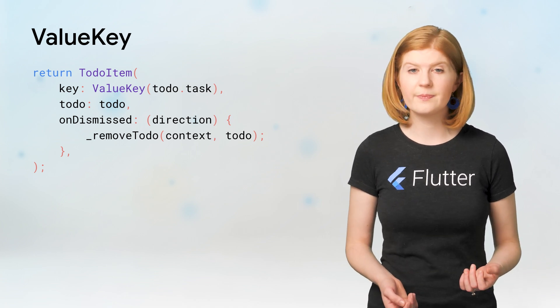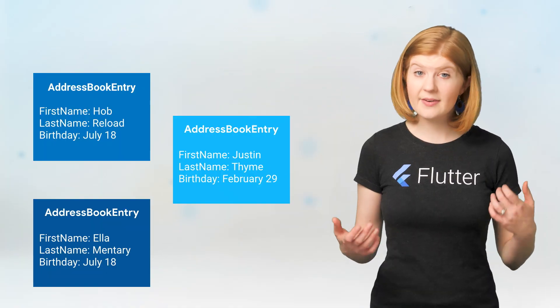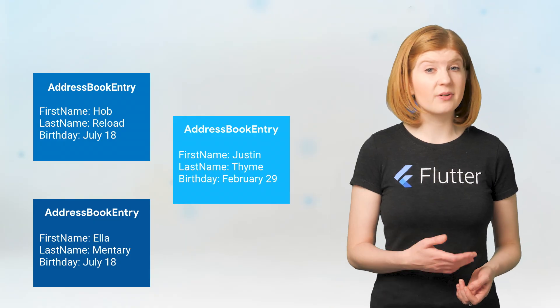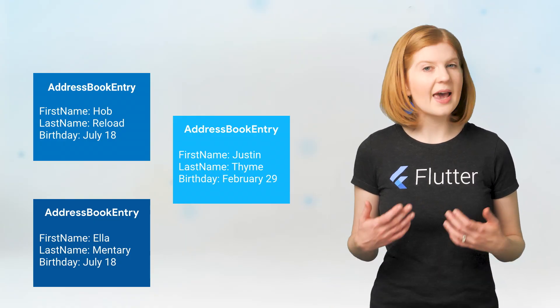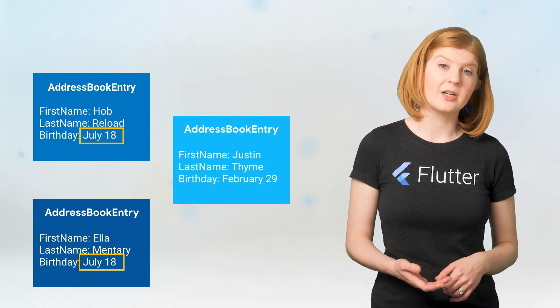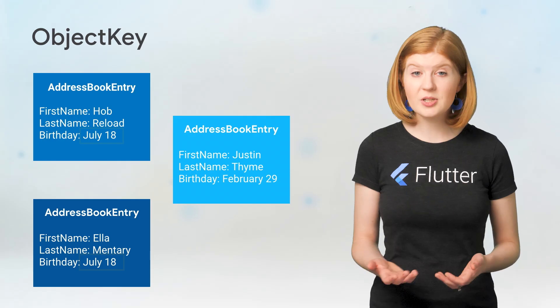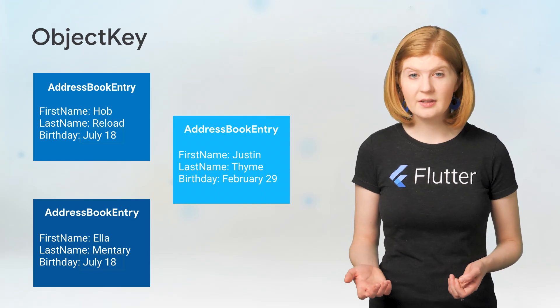Suppose that instead each child widget stores a more complex combination of data. Perhaps you had an address book app listing information about each user. Any of the individual fields, like a first name or a birthday, might be the same as another entry, but the combination is unique. In this scenario, an object key is probably most appropriate. If you have multiple widgets in your collection with the same value, or want to really ensure each widget is distinct from all others, you can use the unique key.